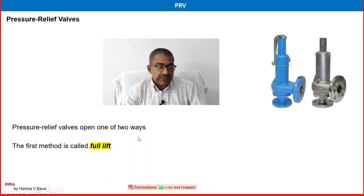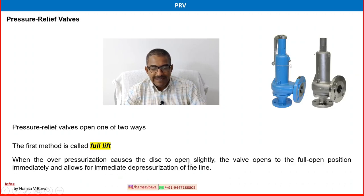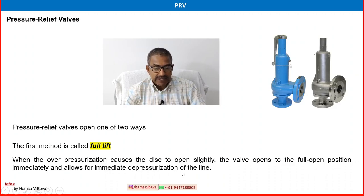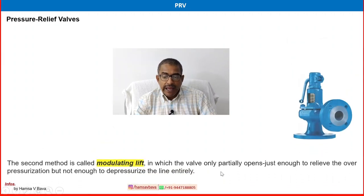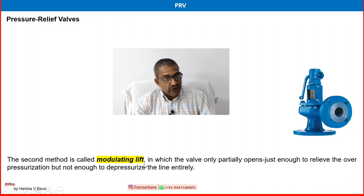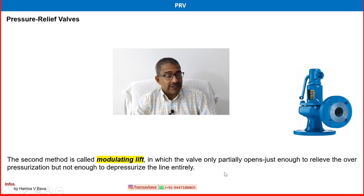Pressure relief valves open in two ways. The first method is called full lift — when overpressurization causes the disc to start opening slightly, the valve immediately moves to a fully open position allowing for immediate depressurization of the line. The second method is called modulating lift, in which the valve only partially opens — just enough to relieve the overpressurization but not enough to depressurize the line entirely.